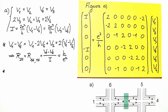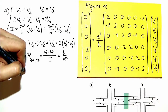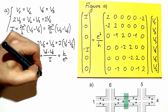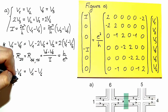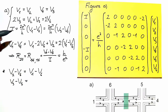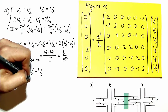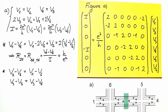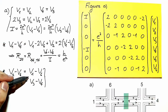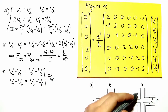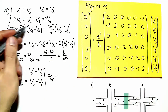The Hall voltages are between contacts 2 and 6, and the pair 3 and 5. For V2 minus V6, we replace V2 by V1 and look at the equations. For V3 minus V5, we replace V5 by V4. We realize that the two voltage differences are equal, and the Hall resistance for both pairs is h over 2e².